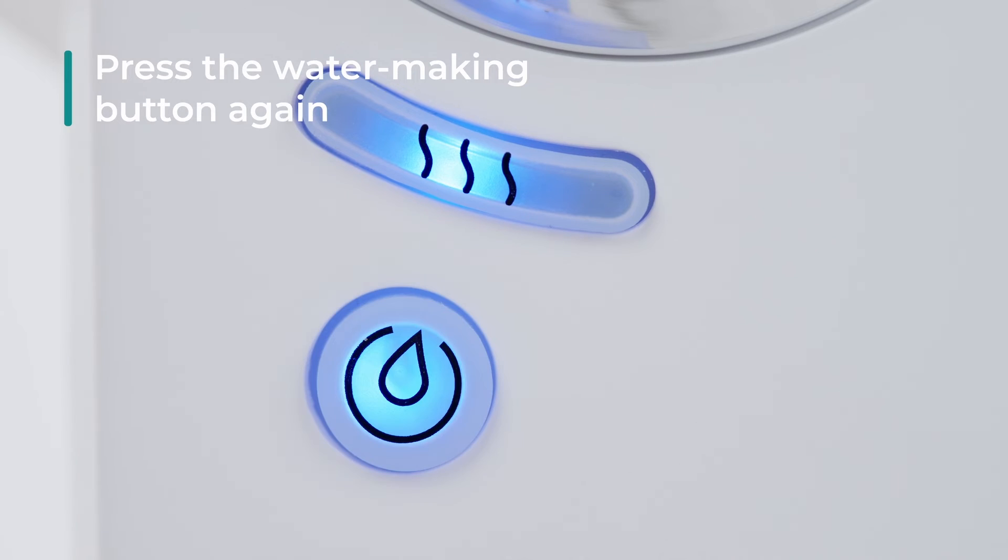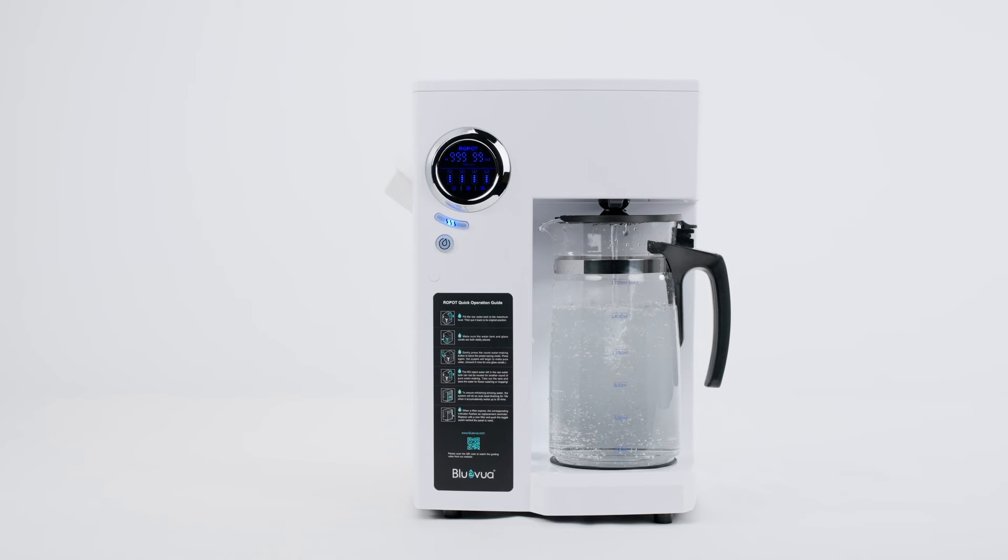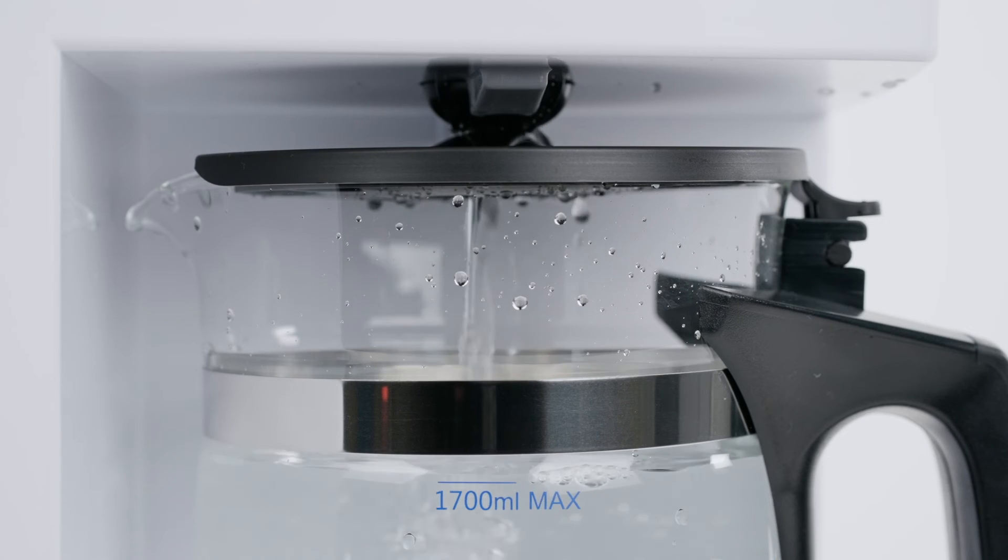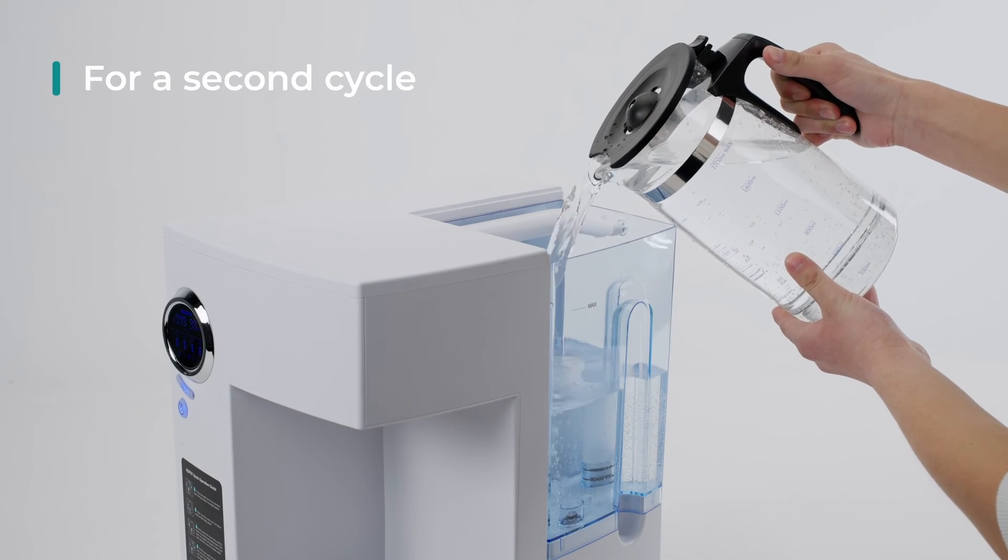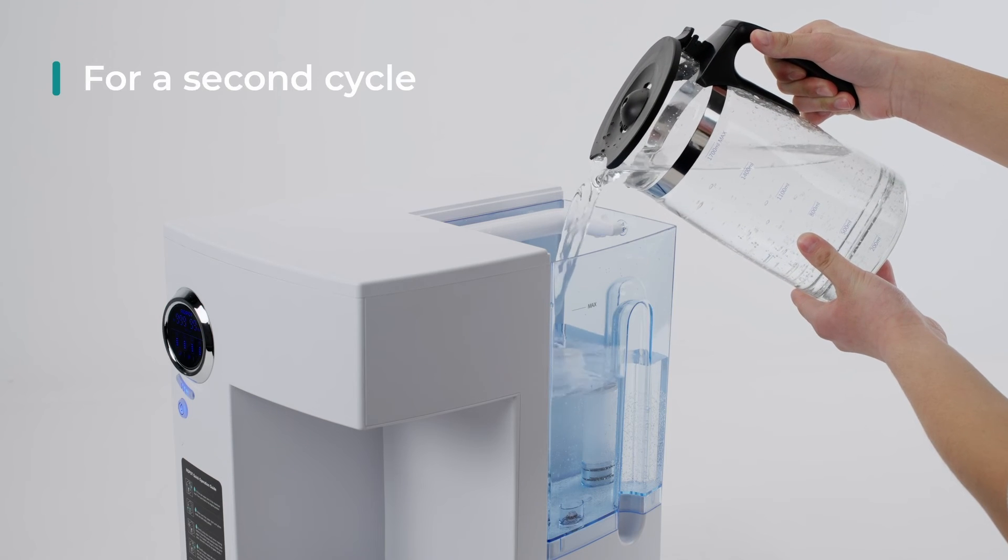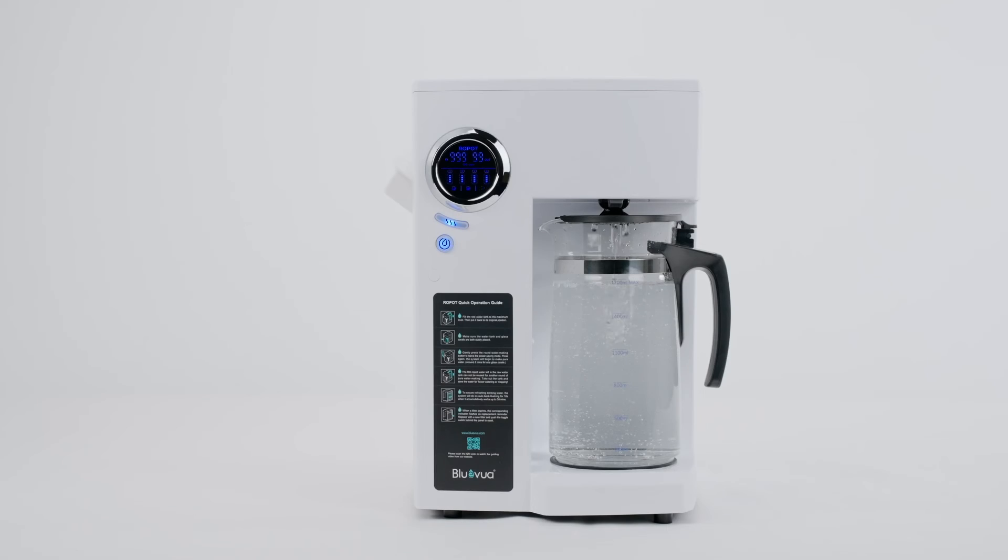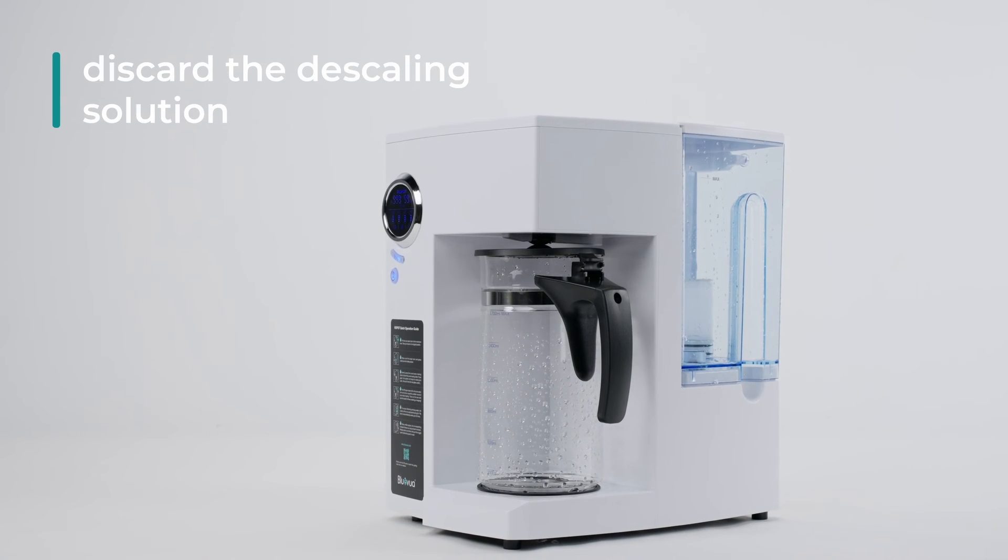Press the water making button again to finish filtering the descaling solution. Transfer the solution from the carafe back to the tank for a second cycle. Afterward, discard the descaling solution from both the tank and the carafe.